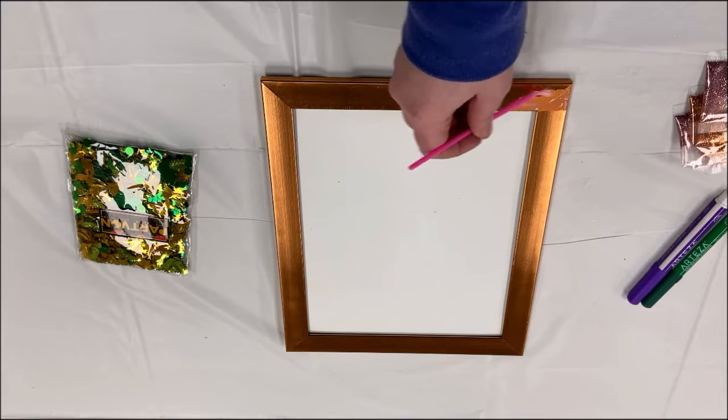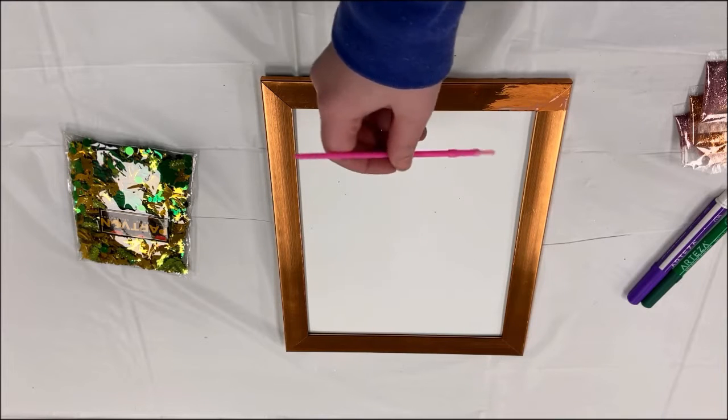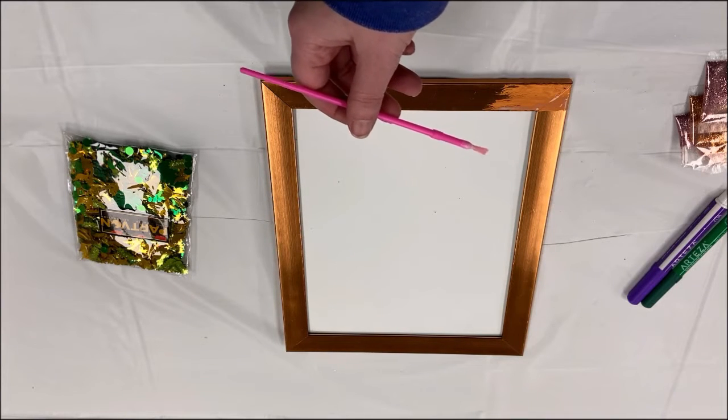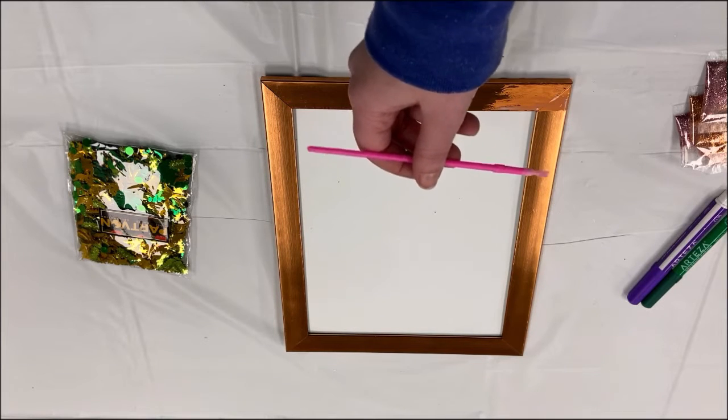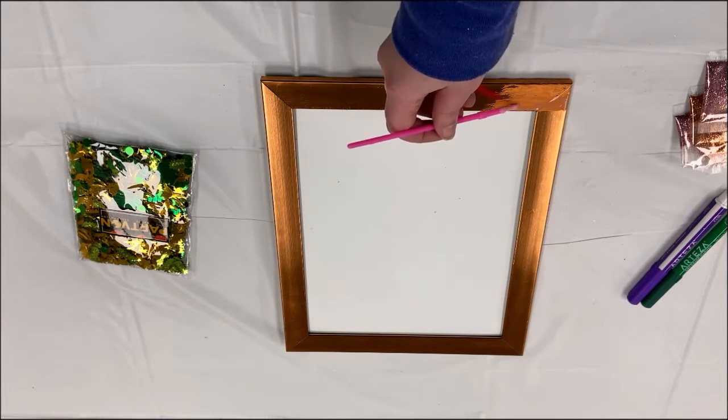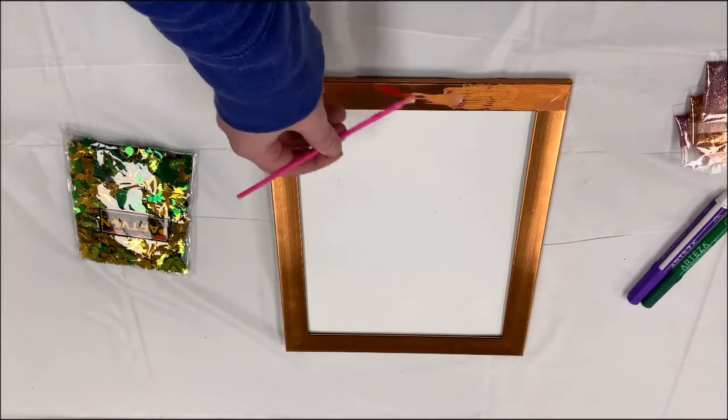So this is the glue mixture. Again, I just took glue, put a little bit of water in it, and we're going to go ahead and start spreading that across the picture frame. And I am going to speed it up a little bit, because you don't want to sit here and see every single stroke I do. And I'm going to cover the whole picture frame.